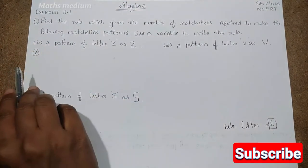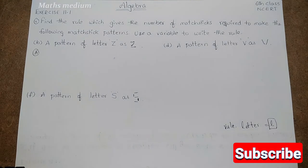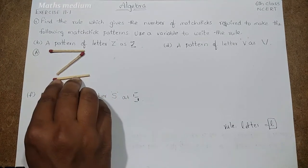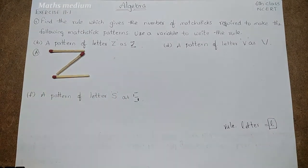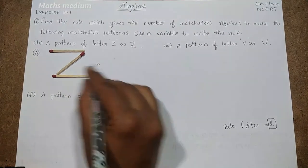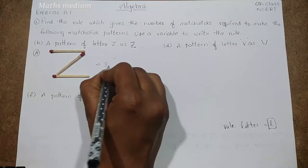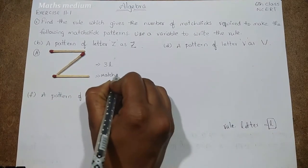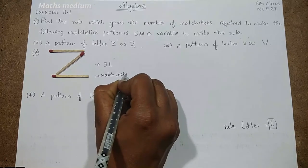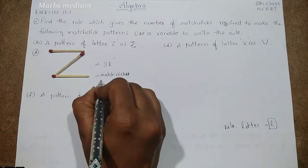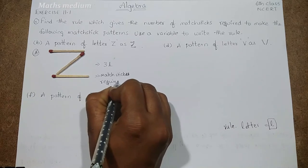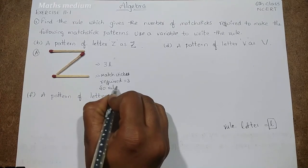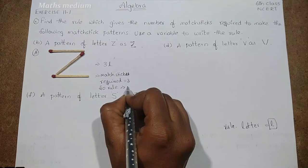A pattern of letter Z. So we have to take 3 matchsticks and put it as Z. See, 1, 2, and 3. So this is the letter Z. Right? So we have to write the rule as 3L because 3 matchsticks are needed. So matchsticks required is equal to 3. Rule is equal to 3L.